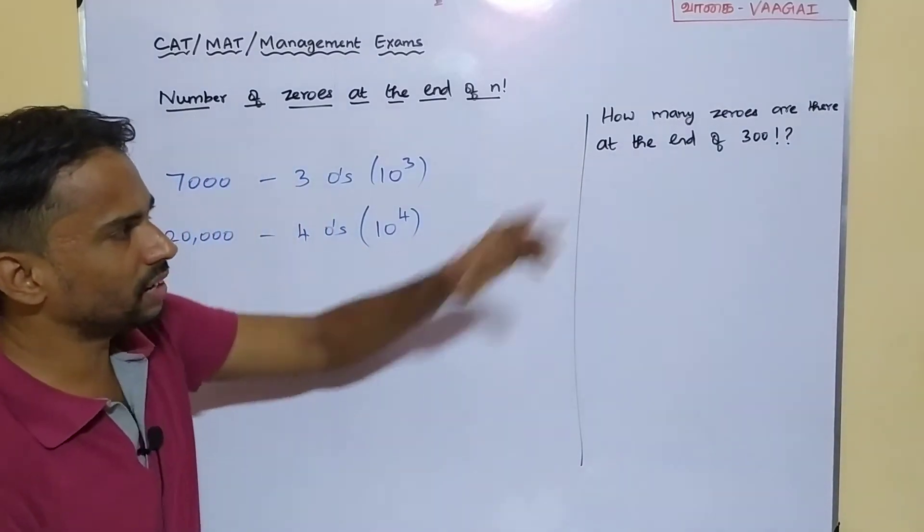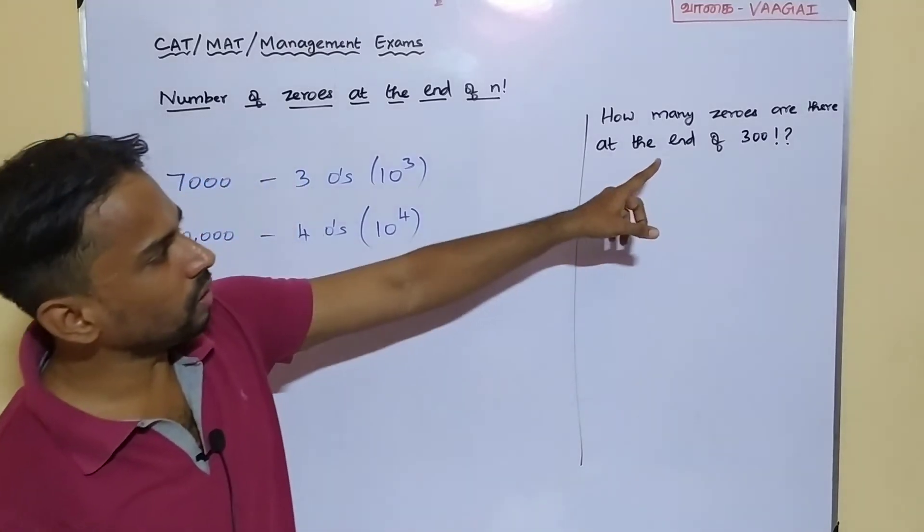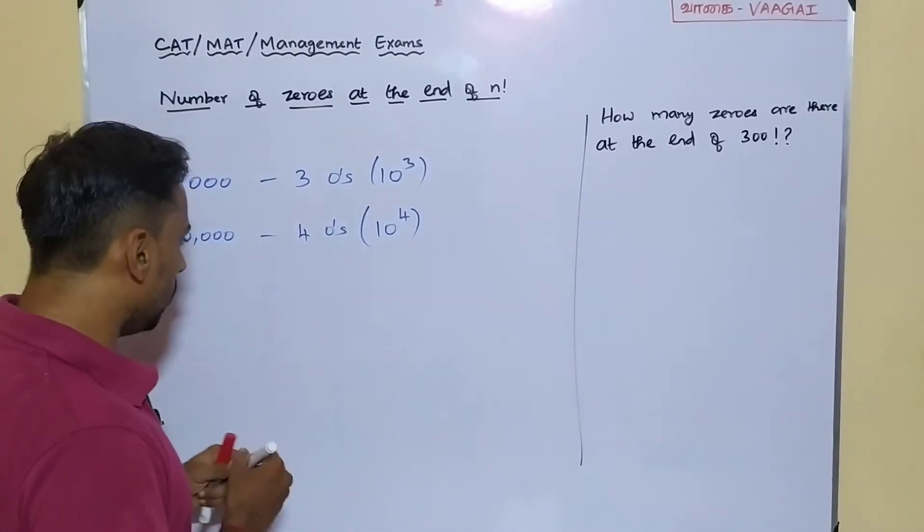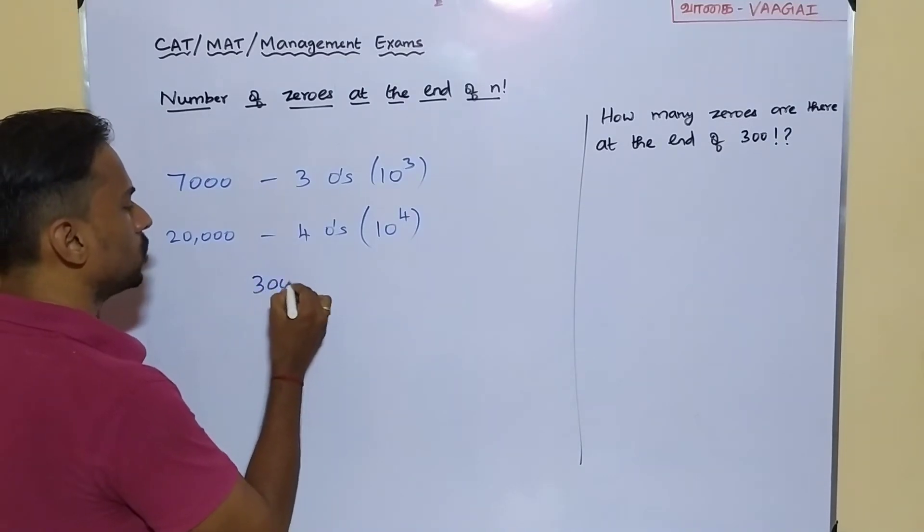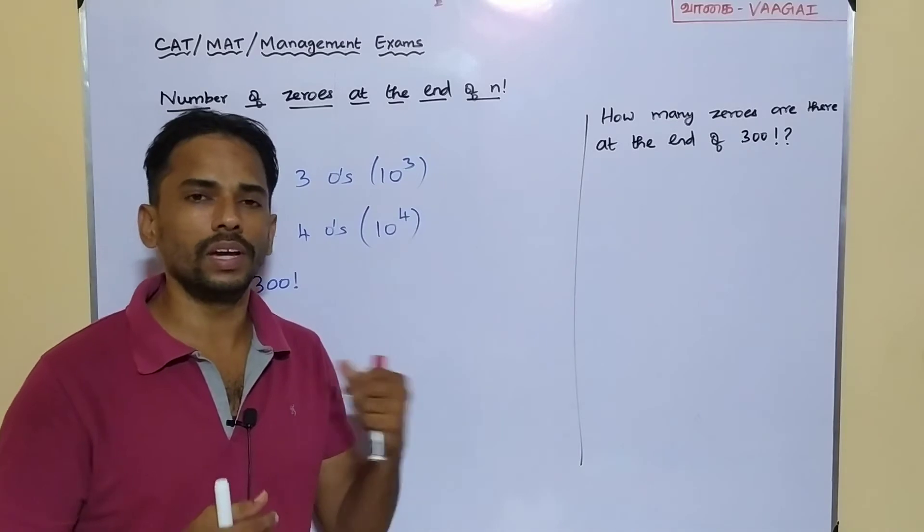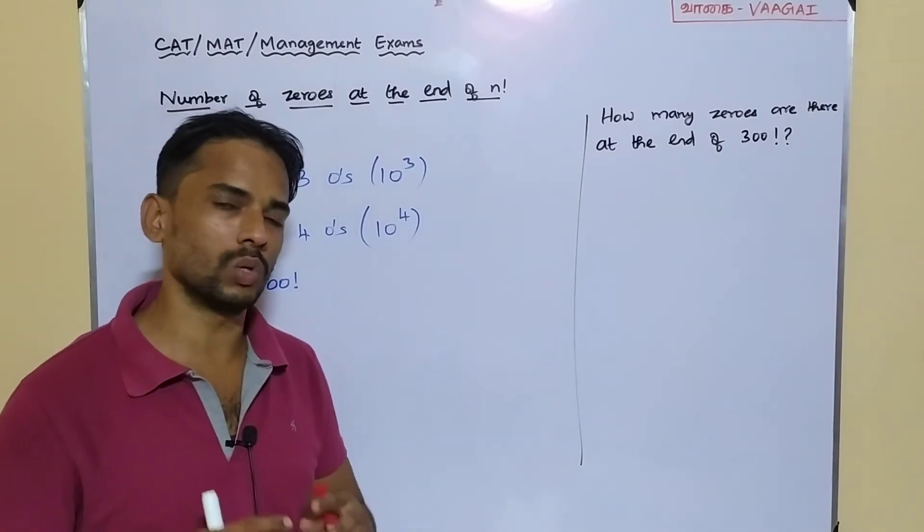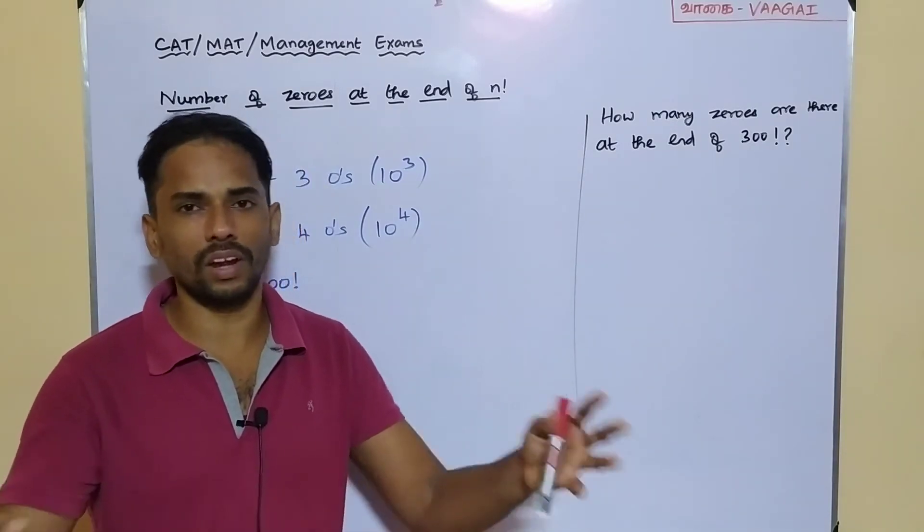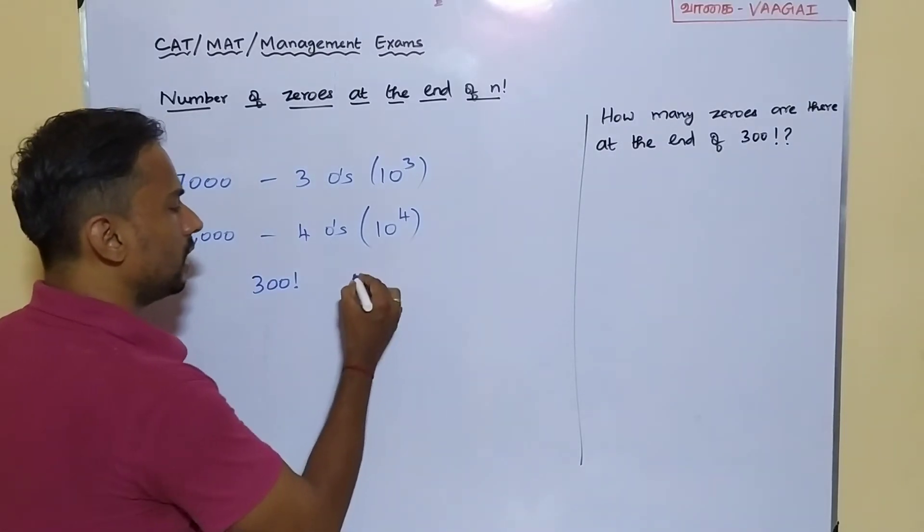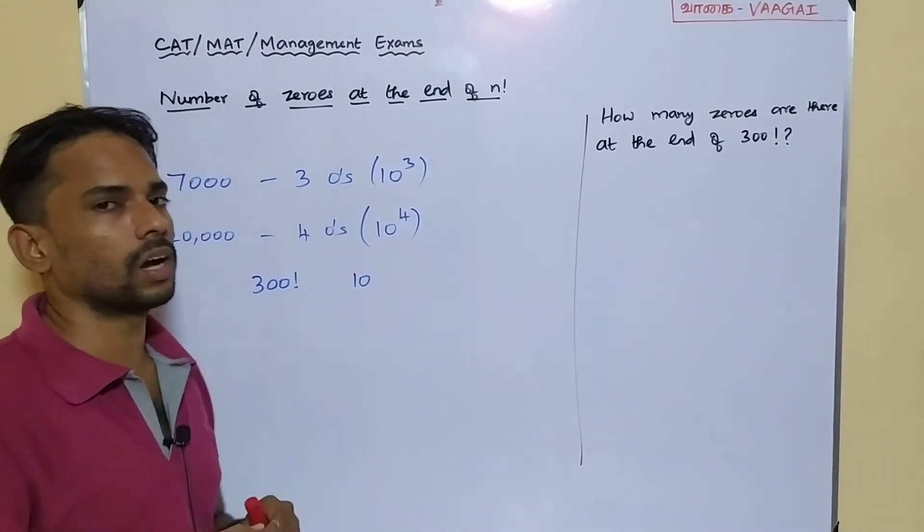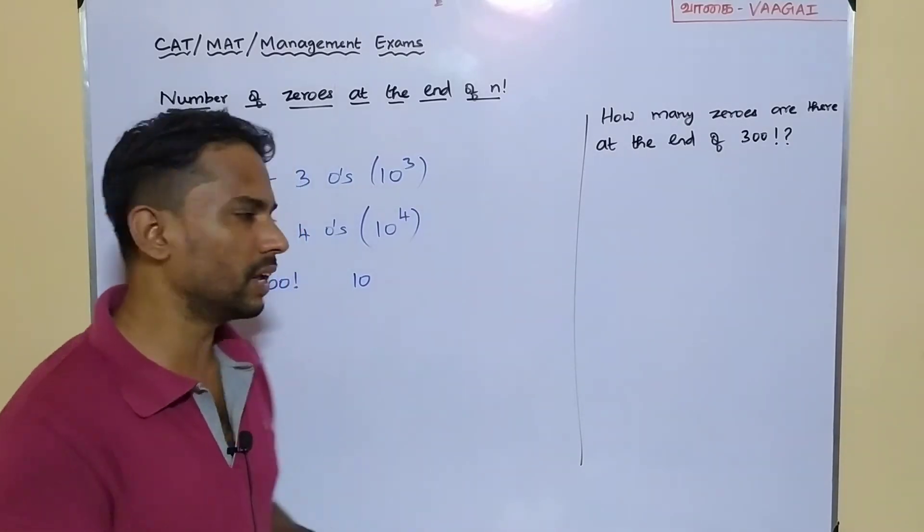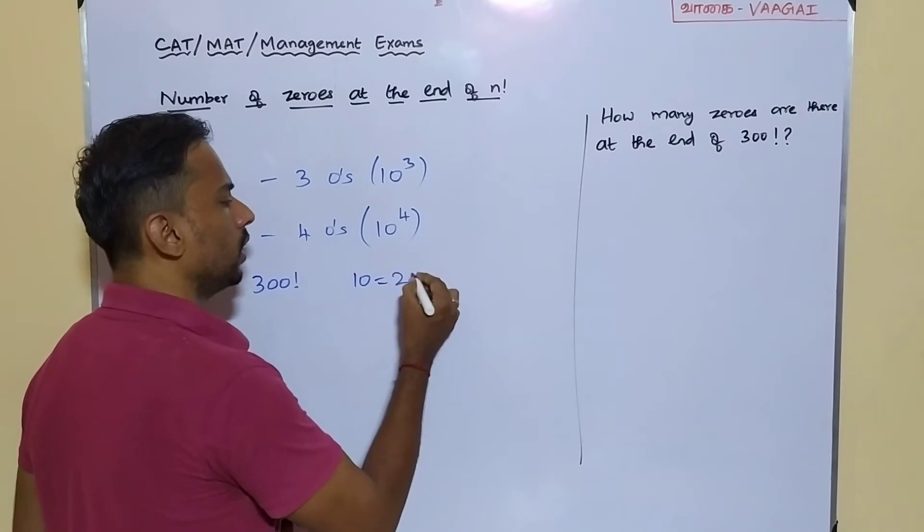So now I think we can enter to our problem. We have got the number 300 factorial. We are supposed to find what is the maximum power of 10 available in this 300 factorial. If you find it, then we are getting the answer. Just think about 10. 10 is a composite number here. In that case, we have to break the 10. This 10 can be written as 2 into 5.